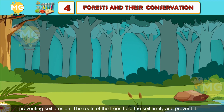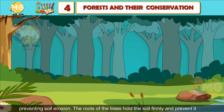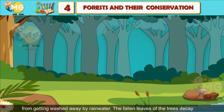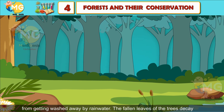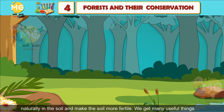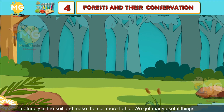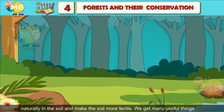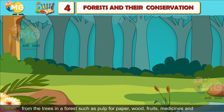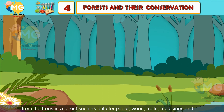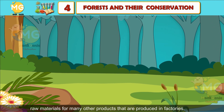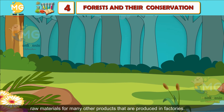The roots of trees hold the soil firmly and prevent it from getting washed away by rainwater. The fallen leaves of trees decay naturally in the soil and make it more fertile. We get many useful things from trees in a forest such as pulp for paper, wood, fruits, medicines, and raw materials for many other products produced in factories.